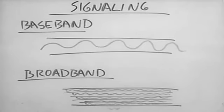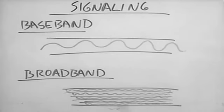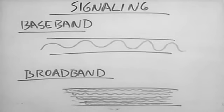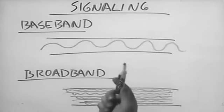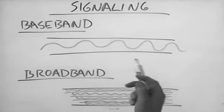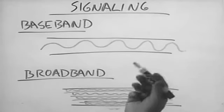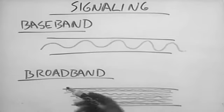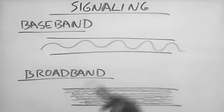A good example of broadband signaling is your cable TV system. You have channel 2, 4, 5, 6, 7, etc. — multiple signals all using the same cable at the same time. For baseband signaling, think of an old telephone. In the old days, telephones used baseband signaling — you picked up the phone receiver and made a call, but while you were using the phone, someone else on a different extension in the same house couldn't make a call at the same time, because only one signal could be on the wire at a time. Those are the two different types of signaling used.